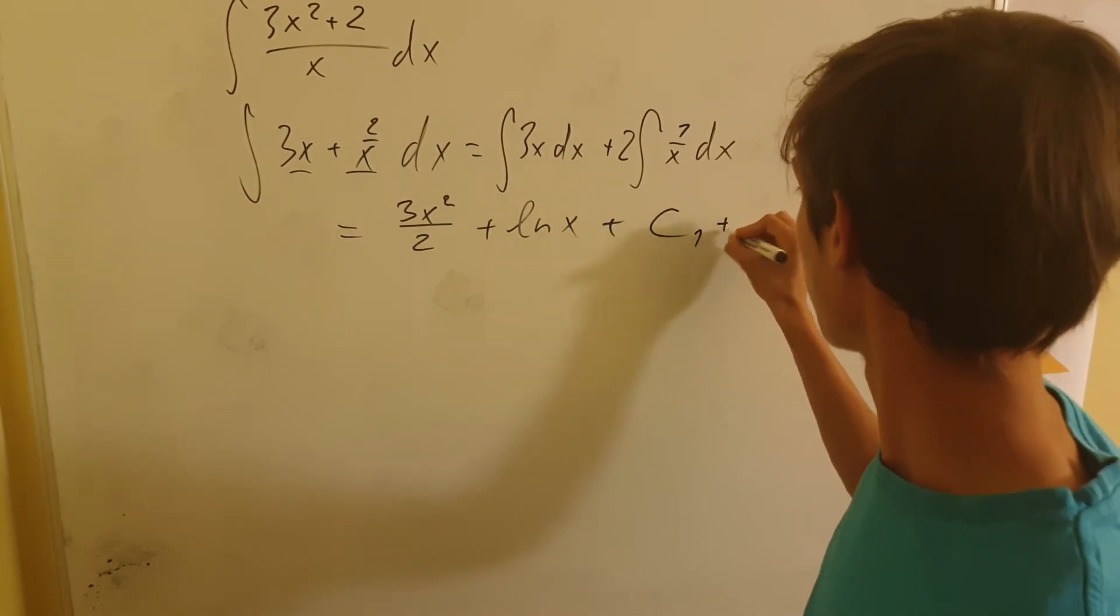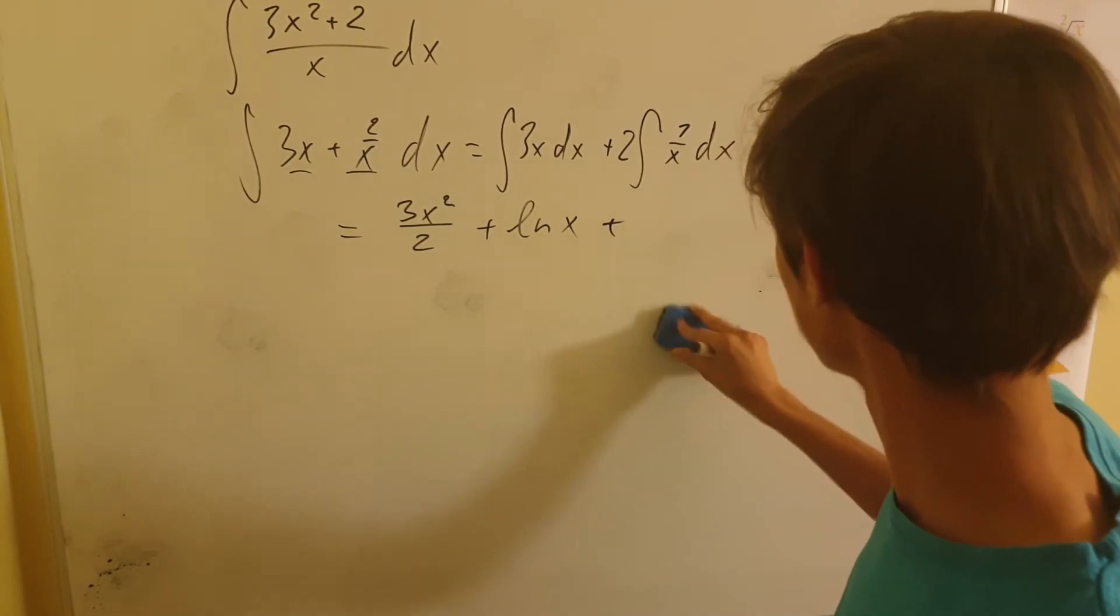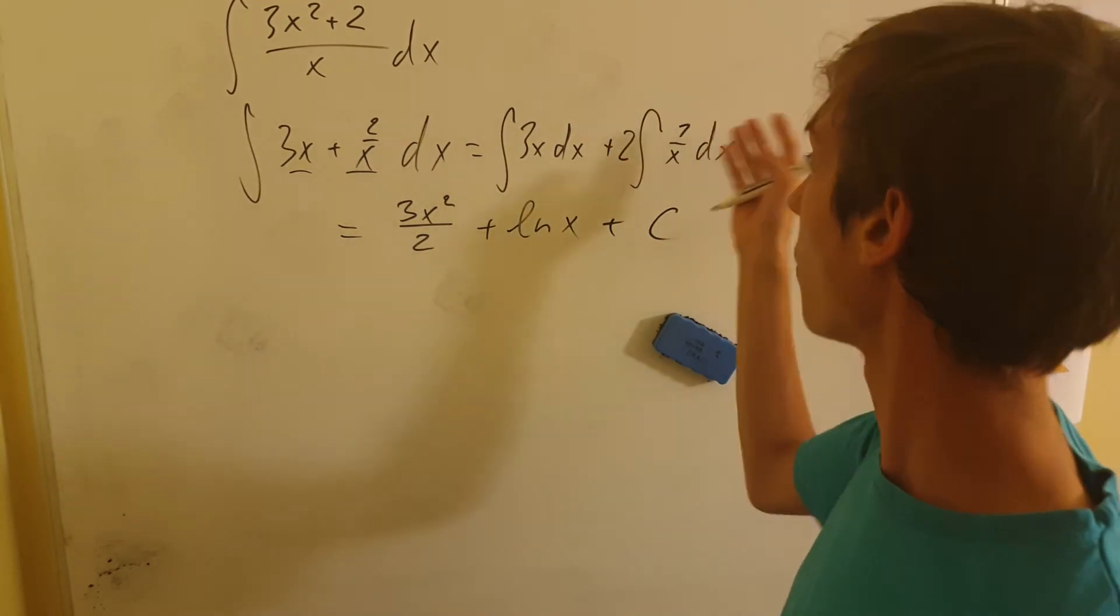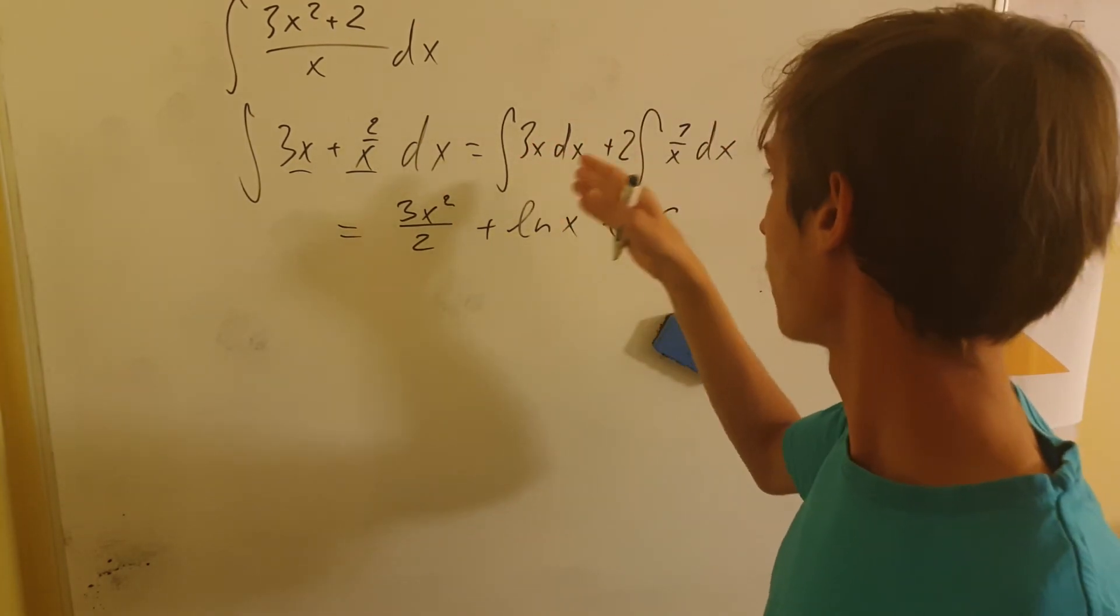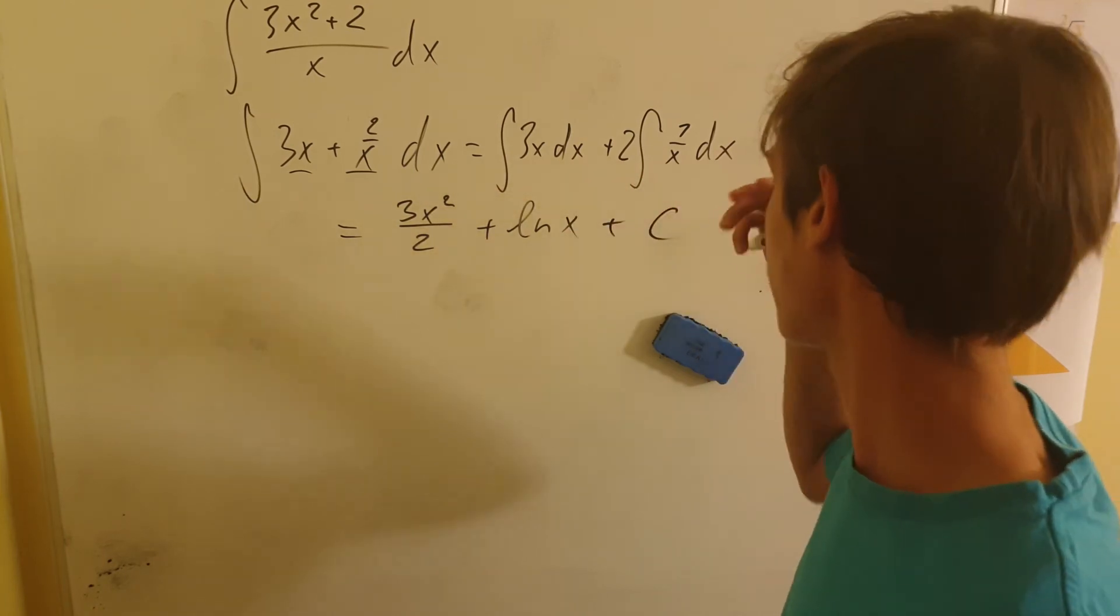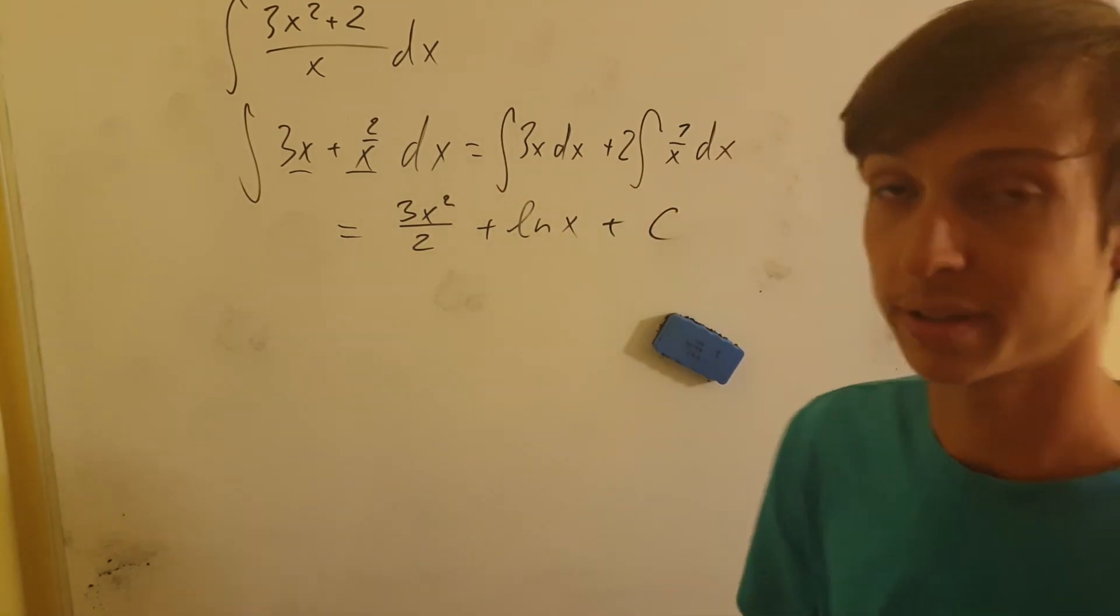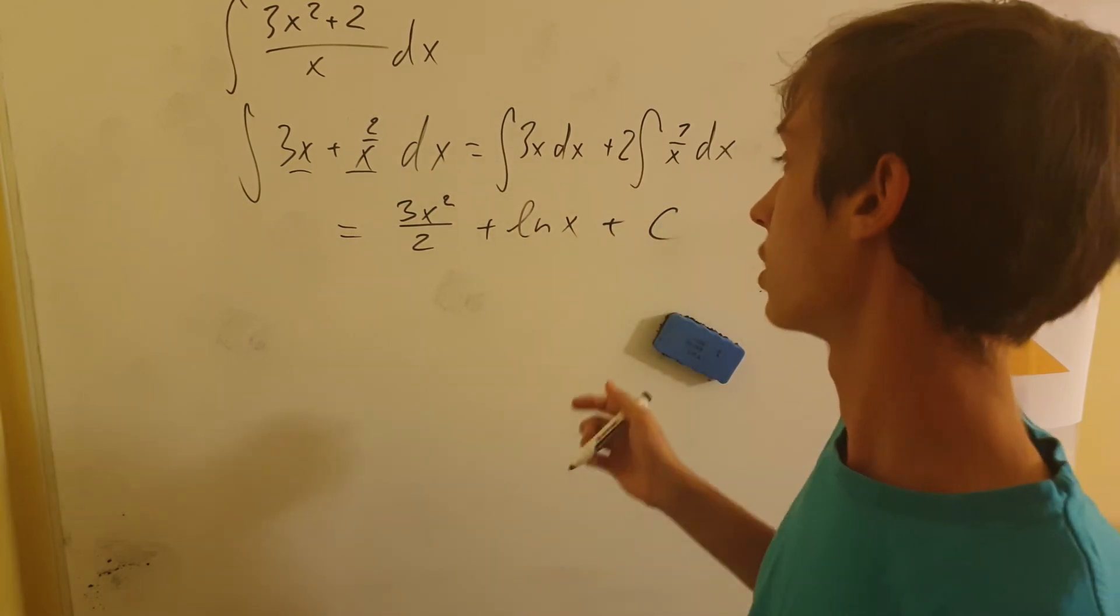So we can just say c1 plus c2 or this one constant that's these two combined in case they're just a single constant. In one of these, one of these will still be represented. Okay, so this is the result of our integration.